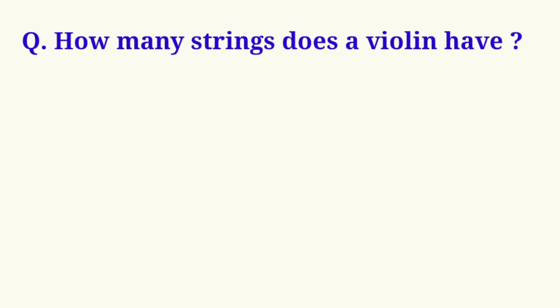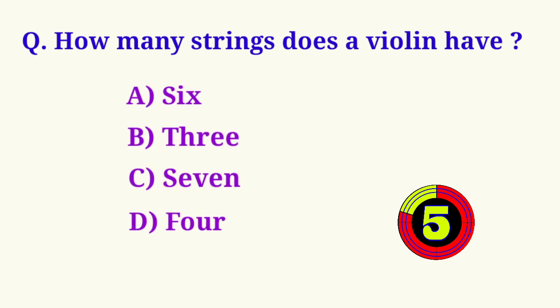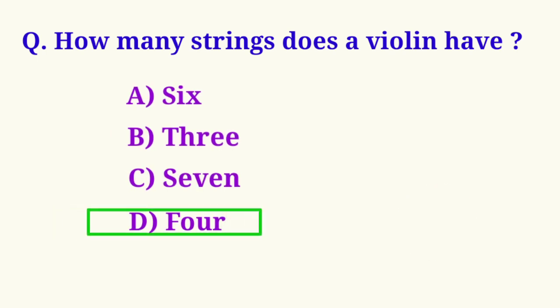How many strings does a violin have? Option D, 4, is the correct answer.